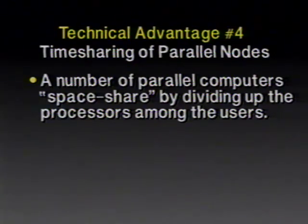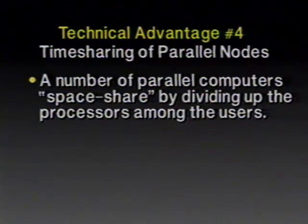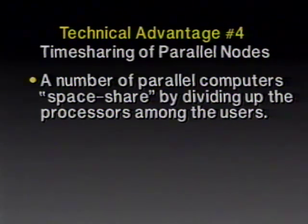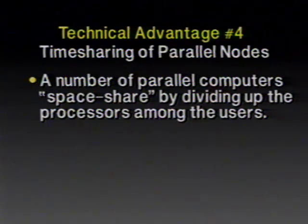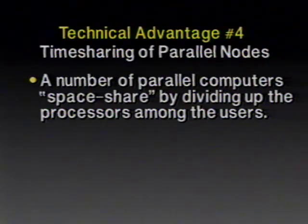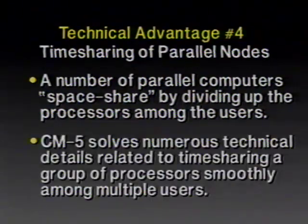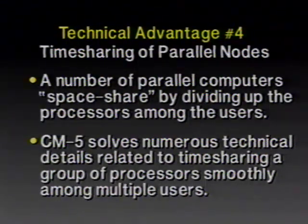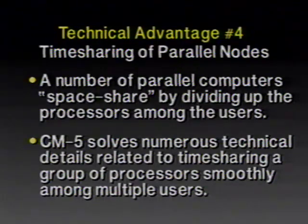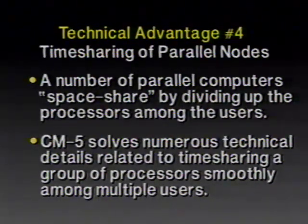Technical advantage number 5: the networks — both the control network and the data network — are user accessible. They are designed so that user-mode code is capable of exercising all of the non-privileged functions of the networks. This means that the different processors operating on user tasks can exchange data, do broadcasting and reduction — everything — without having to call the operating system. That means communications doesn't require system calls and has no operating system overhead, which considerably improves the performance of code on the CM5.